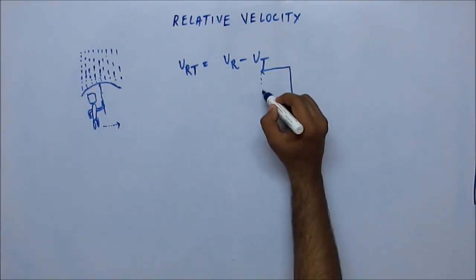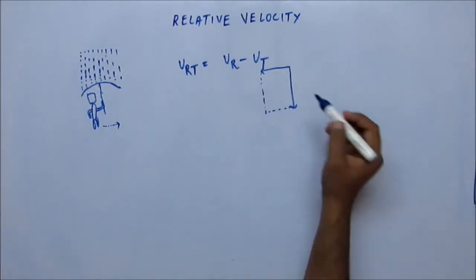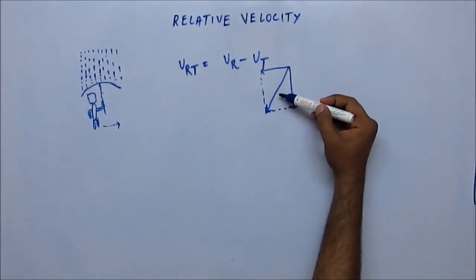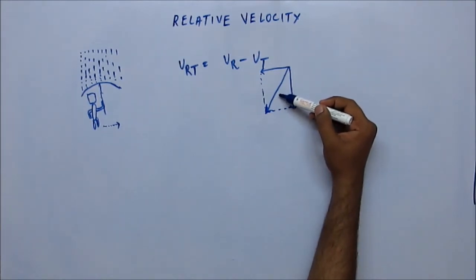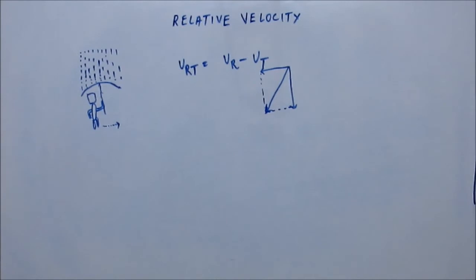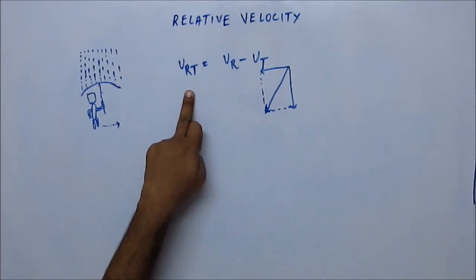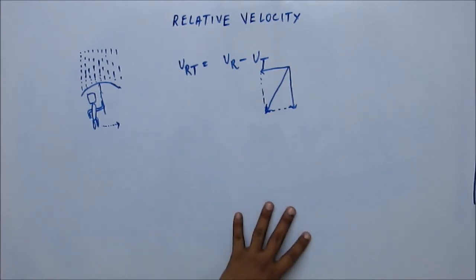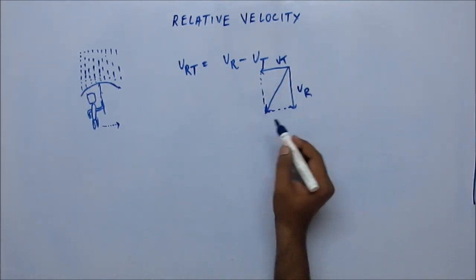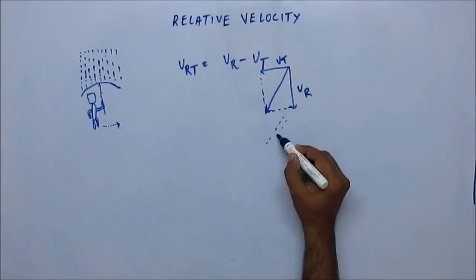Using the parallelogram law of vector addition, we add these two vectors. The resultant is the velocity of rain with respect to Tom. So Tom gauges the rain as coming in this diagonal direction. According to vector algebra, velocity of rain with respect to Tom equals velocity of rain minus velocity of Tom. The sum of these two gives a resultant, and the rain appears to be coming obliquely.